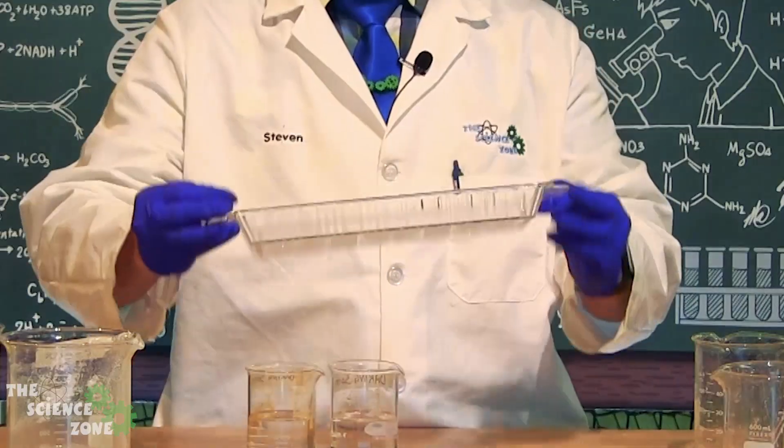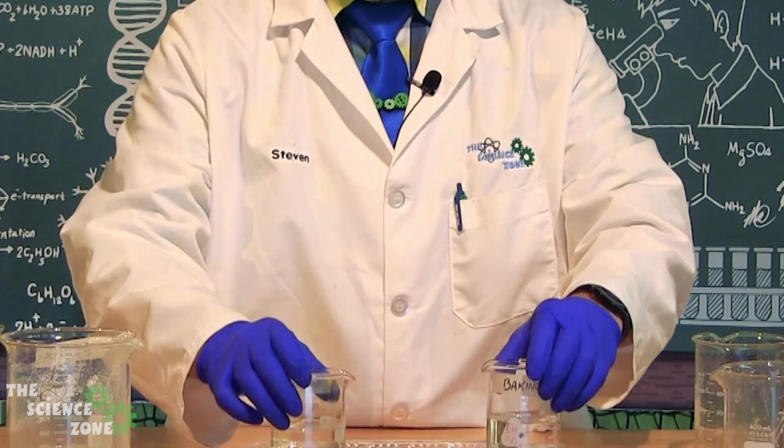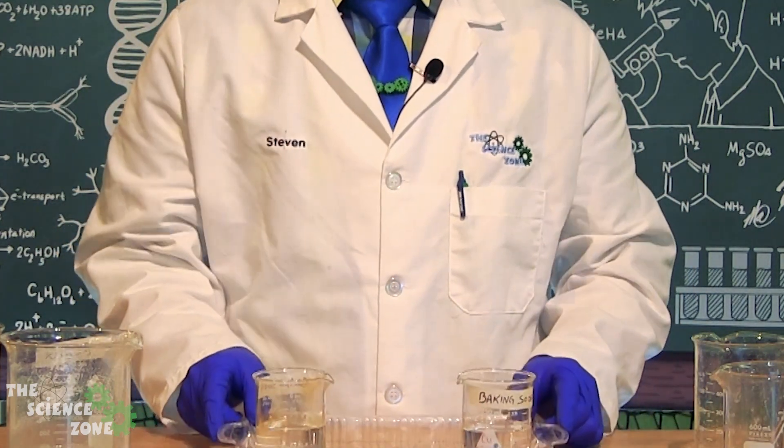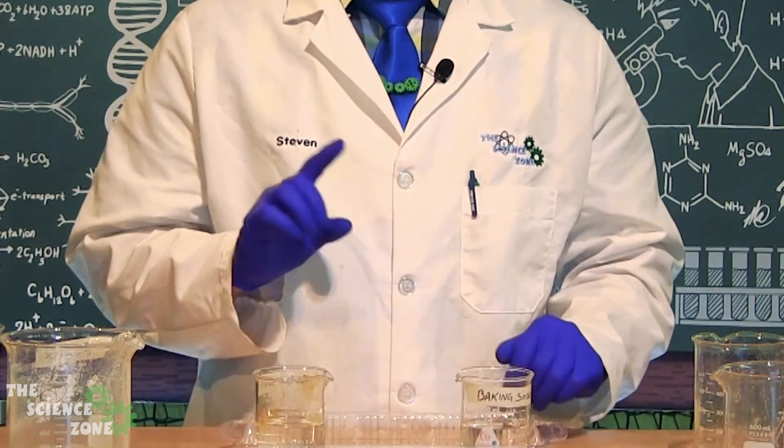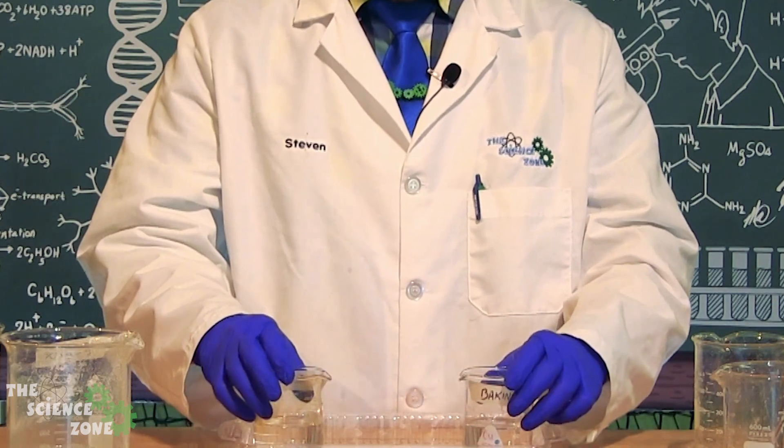We're going to want to leave these beakers for about a week in a place where they won't be disturbed or bumped in any way. Once you have your supersaturated solution divided into your beakers, the next step is to place them on a tray a few inches apart from one another.